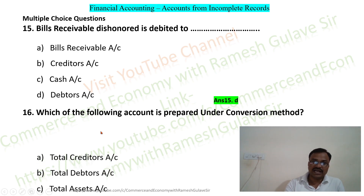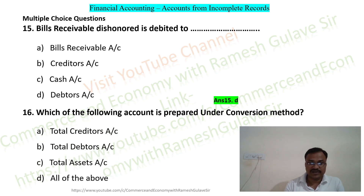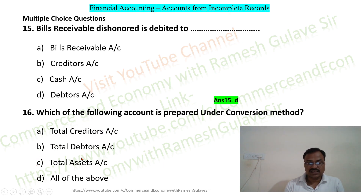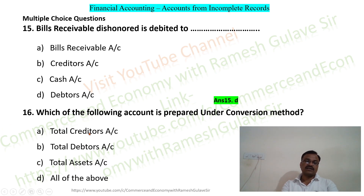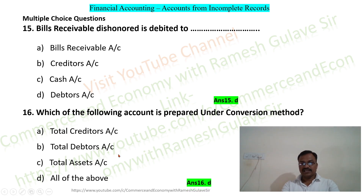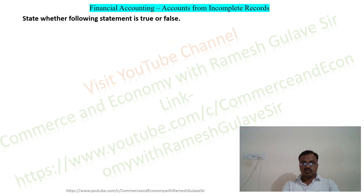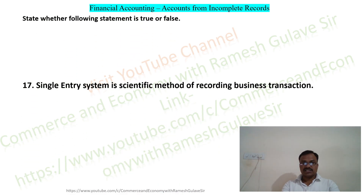The next question asks: which of the following accounts is prepared under conversion method? Options are total creditors, total debtors, total assets account. Under conversion method we prepare various accounts like total debtors account, total creditors account, and assets account. So all of the above — option D — is the right answer.